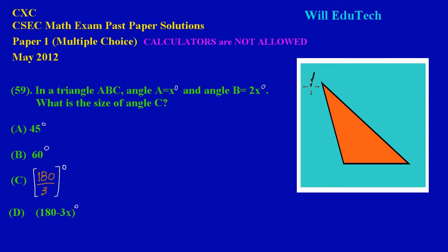Let's say this is angle A, this is angle B, and this is our angle C. They gave us some very important information. They said that the angle is equal to x degrees, so my angle at A is equal to x degrees.